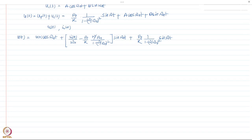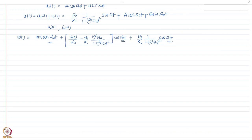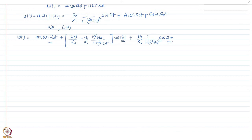An important observation: the response now contains two frequencies. The first is ωₙ, the natural frequency of the system, appearing in the complementary terms. The second is ω, the applied excitation frequency, appearing in the particular solution. One might ask: at what frequency would the system vibrate — at ωₙ or at ω? What is the physical significance of each frequency?